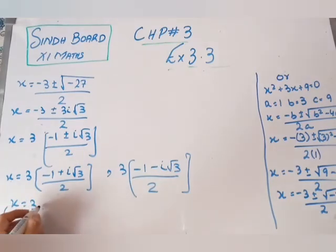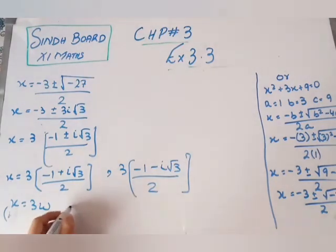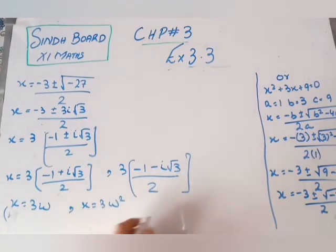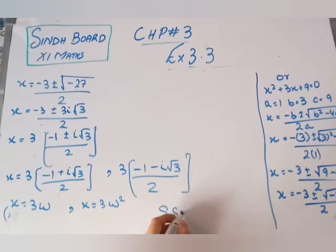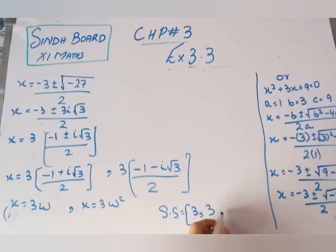We know that omega equals to (minus 1 plus iota under root 3) upon 2, and omega squared equals to (minus 1 minus iota under root 3) upon 2. Therefore, the first value of x is 3 omega and the second value of x is 3 omega squared.